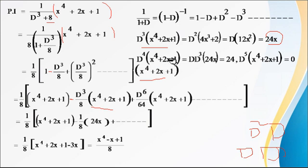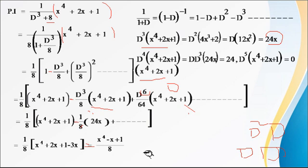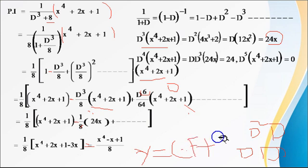Since D⁶ and higher derivatives of x⁴ + 2x + 1 are all zero, we stop here. Therefore PI = 1/8 · [(x⁴ + 2x + 1) − (1/8)·24x] = 1/8 · [x⁴ + 2x + 1 − 3x] = 1/8 · (x⁴ − x + 1). The general solution is y = CF + PI, so write the values of CF and PI together.